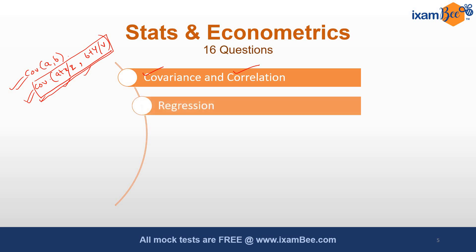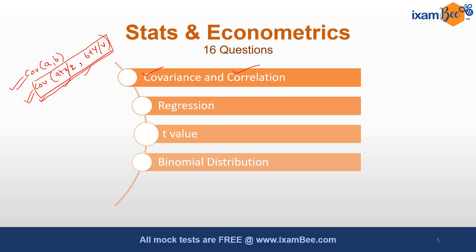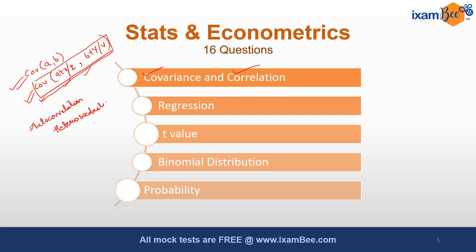There were also questions from regression analysis, questions based on the calculation of the t-value, questions from binomial distribution, a few questions from probability, and questions from autocorrelation and heteroscedasticity. When talking about autocorrelation, the Durbin-Watson test is always very important — there was also a question related to that.